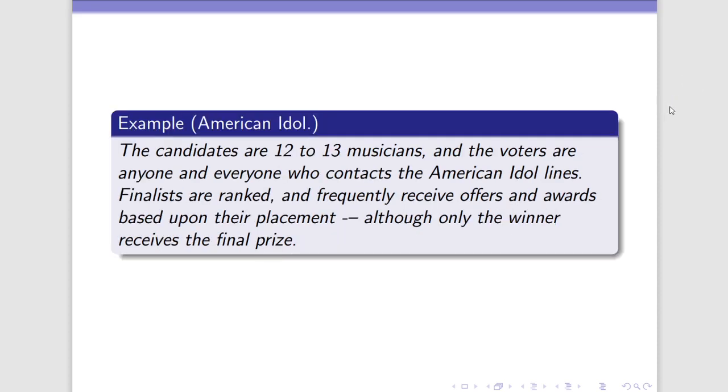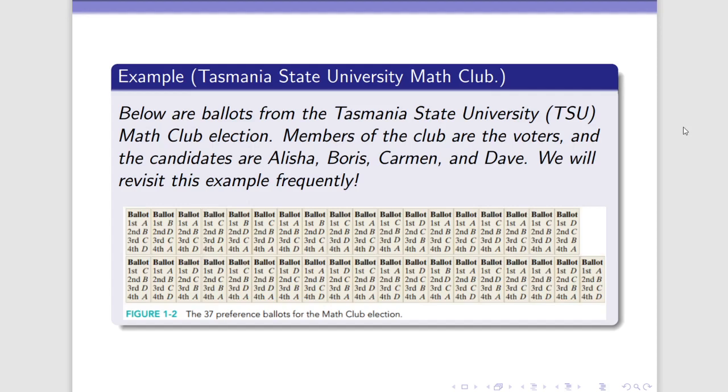A quirky example is American Idol. This probably is the textbook's favorite. It is pretty free-for-all. We have 12 or 13 musicians, and voters get to vote multiple times for anyone they like. Voters can be anyone. So that means that, unlike most elections where it's a very specific and fairly limited pool of people who get to vote, and they only get to vote once, in American Idol, anybody can vote as long as they contact the American Idol lines somehow, and they can vote as many times as they want for anybody. Technically speaking, it is a full-ranking outcome. However, only the winner receives the final prize. Most useful for us, though, is going to be this example. It'll be a recurring example in our work for the Tasmania State University, or TSU for short, Math Club election. In this fictitious election, we are trying to choose a president looking at Alicia, Boris, Carmen, and Dave as candidates. And we're going to be using this election to try to introduce a lot of our methods and to try them all out.